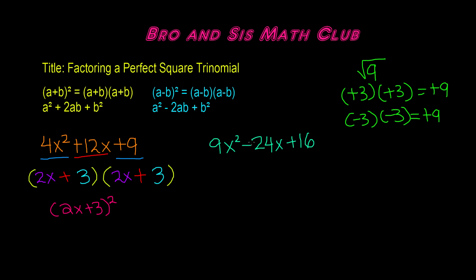Now let's do our second example: 9x² minus 24x plus 16. To identify this as a perfect square trinomial, we look at the first and last terms. The square root of 9x² is 3x, and the square root of 16 is 4. Now we can write down our binomials. The first step is to find the square root of the first term — 3x — because 3 times 3 gives you 9, and x to the power of 1 times x to the power of 1 gives you x².